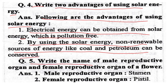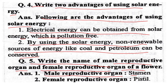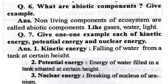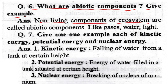Question No. 5. Write the name of the male reproductive organ and female reproductive organ of a flower. Question No. 6. What are the abiotic components? Answer: Non-living components of the ecosystem are called abiotic components — examples include gases, water, and light.